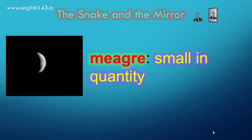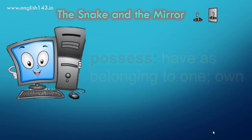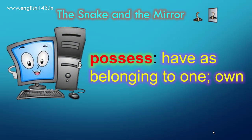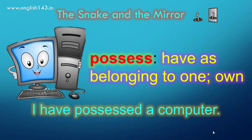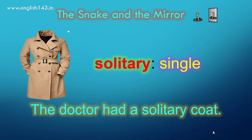Meagre means small in quantity. The doctor's earnings were meagre — that means very little income. Possess means have as belonging to one, or to own. I have possessed a computer. Solitary means single. The doctor had a solitary coat.